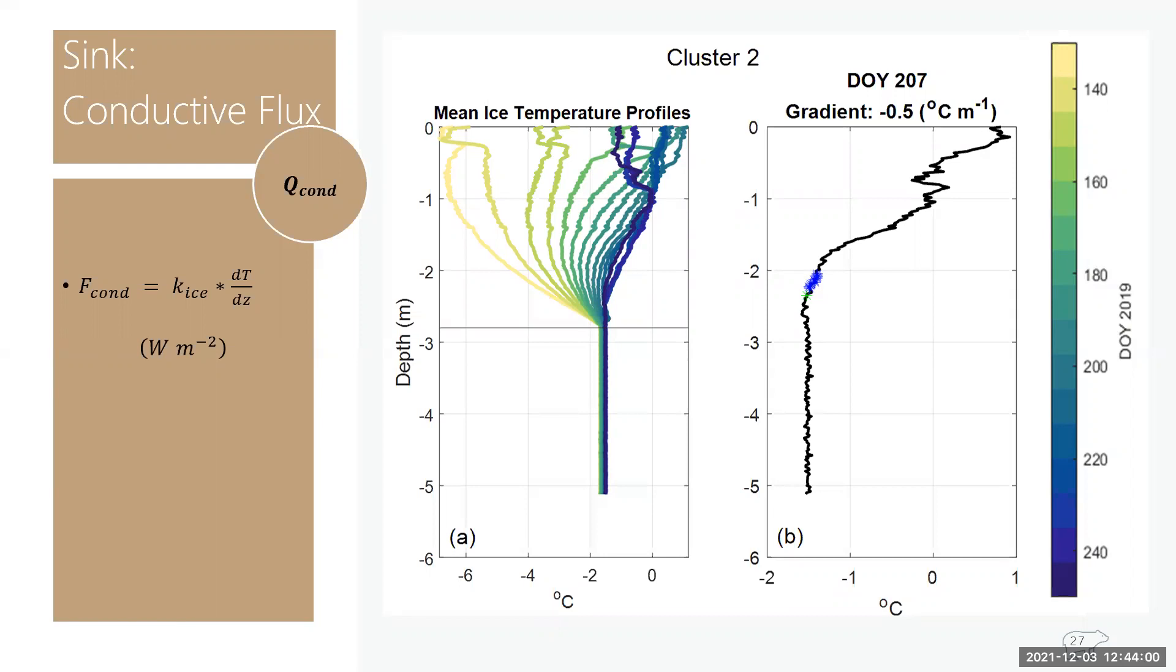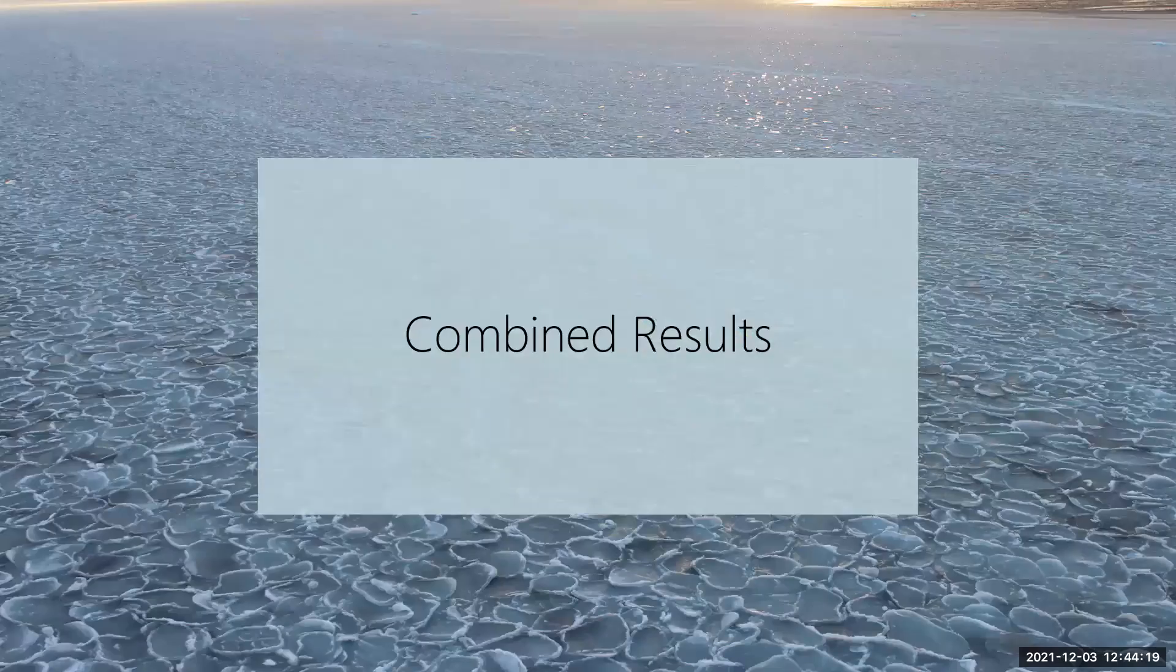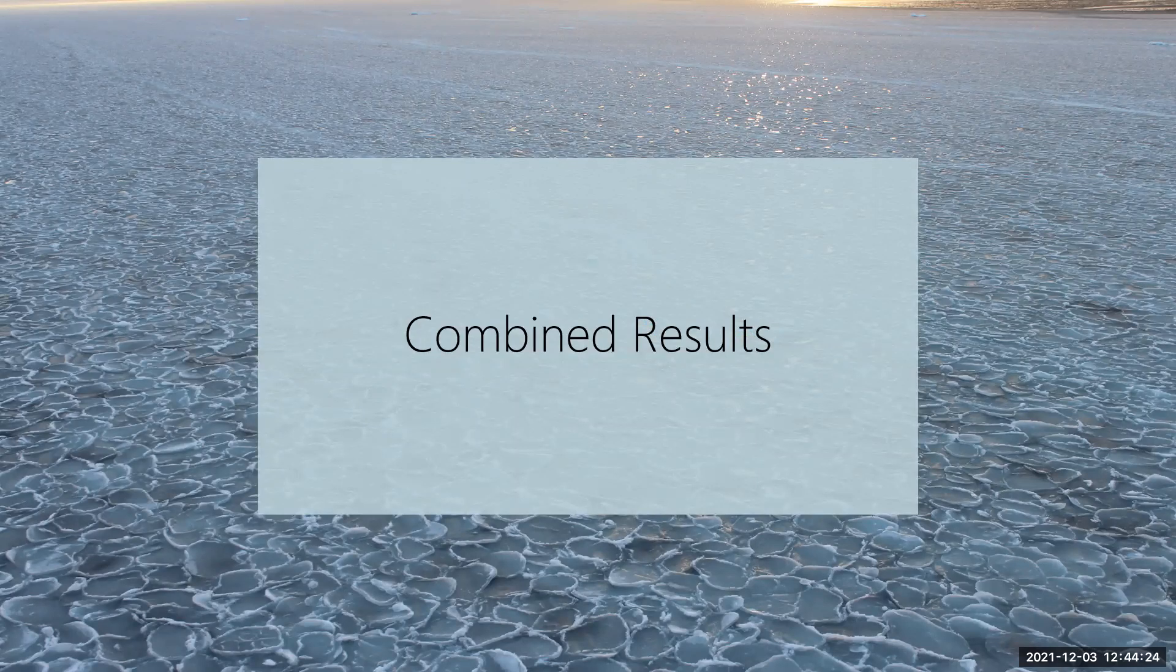And panel B is an example of how I determined this gradient. It has the same axis as panel A, but this green star right here represents the location at the bottom. And then these blue stars here represent the data used to calculate the gradient, which is simply the slope. So the units are degrees Celsius per meter. So now that I have the gradient for each profile, I have the conductive flux. And similarly to the accumulated solar radiation, I used this formula to determine the seasonal contributions of heat. So it's also a cumulative time integral.